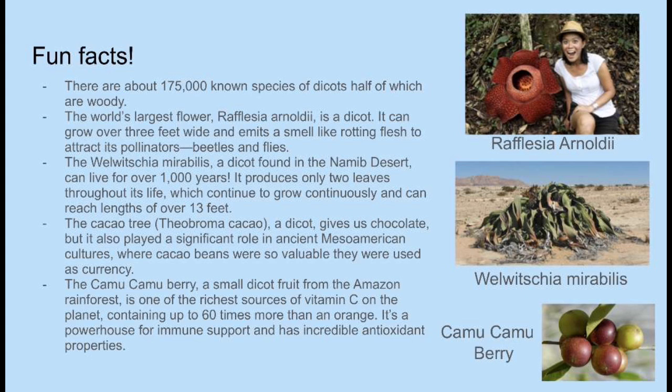There are many fun facts about dicots. There are about 175,000 known species of dicots, half of which are woody. The world's largest flower, Rafflesia arnoldii, is a dicot — you can see the picture on the right of the slide. It can grow to over three feet wide and emits a smell like rotting flesh, which attracts pollinators such as beetles and flies. The Welwitschia mirabilis, a dicot found in the Namib Desert, can live for over 1,000 years. It produces only two leaves throughout its life, which can continue to grow and reach lengths over 13 feet.